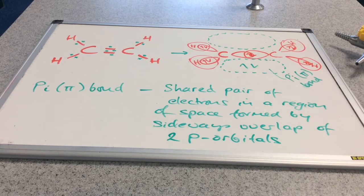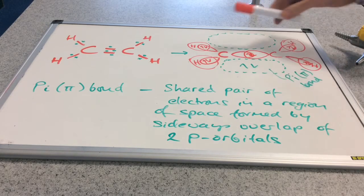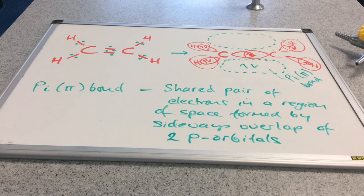And you can see I've written an explanation there. A pi bond is a shared pair of electrons in a region of space that's been formed by the sideways overlap of two p-orbitals.